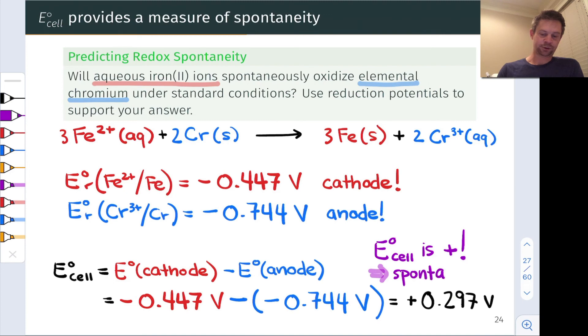So our final conclusion here is that yes, Fe²⁺ cation is capable of oxidizing chromium. And specifically, the reaction that's most likely to occur is the formation of iron metal solid and Cr³⁺.